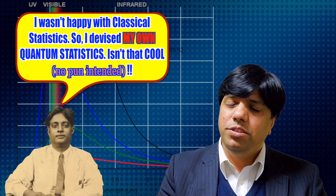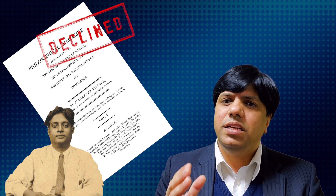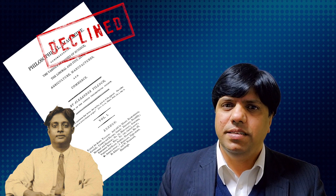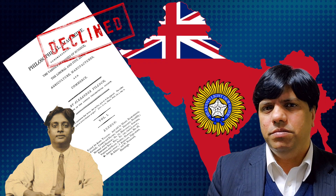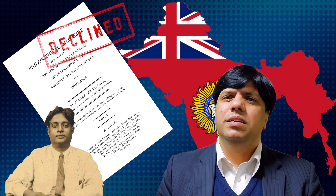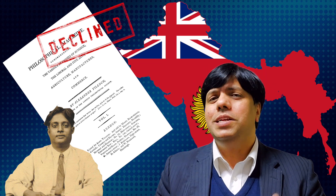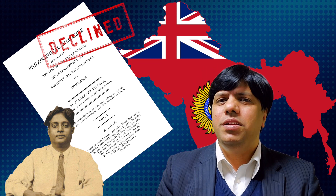So he sent his paper to Filmag — the science magazine of its time — in England. But they didn't publish it. They returned it to him saying they cannot publish it, with no reason cited. Bose understood instinctively it might be some racism, some kind of British supremacy over Indians. We don't know. But he understood it, so he sent his paper to Einstein.